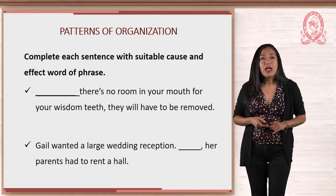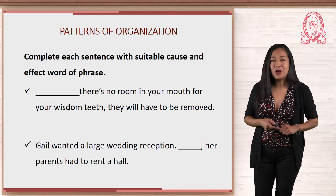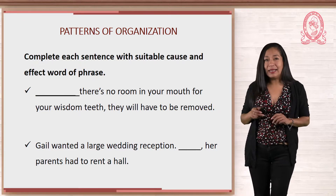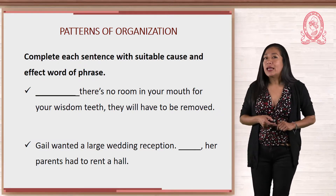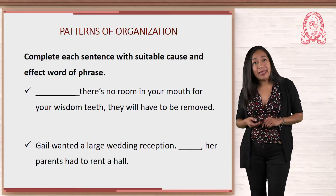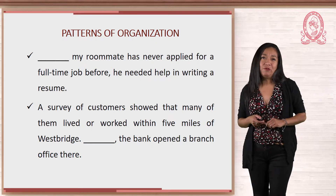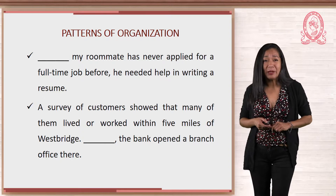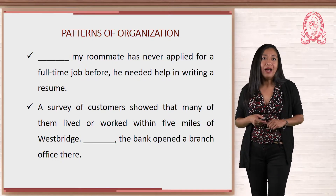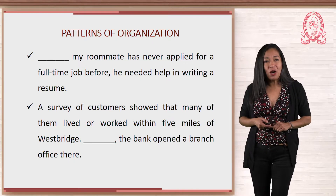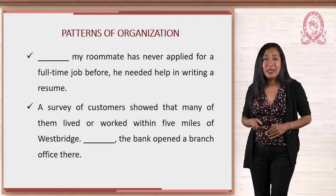Now let's continue practicing. Complete each sentence with a suitable cause and effect word or phrase from the previous box. Try to use a variety of transitions. Number one: Blank — there's no room in your mouth for your wisdom teeth — they will have to be removed. Number two: Gail wanted a large wedding reception — blank — her parents had to rent a hall. Number three: Blank — my roommate has never applied for a full-time job before — he needed help in writing a resume. Number four: A survey of customers showed that many of them lived or worked within five miles of Westbridge — blank — the bank opened a branch office there. Now you can have a discussion with your tutor and peers about the cause and effect word or phrase that best completes the previous sentences.